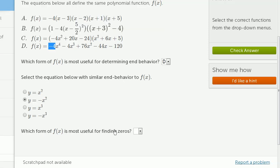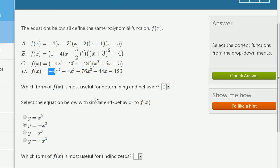Which form of f of x is most useful for finding zeros? Well, when we're finding zeros, we're trying to find the x values that would make the function equal to zero. And this first form right over here where we're all factored out, that's the most useful for finding zeros.